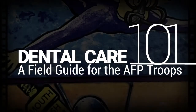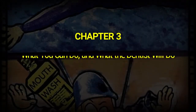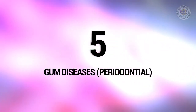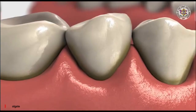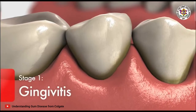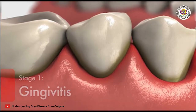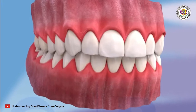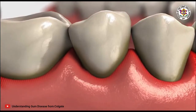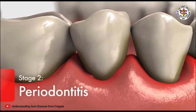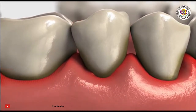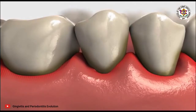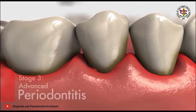Chapter 3, Part 2: Common oral health problems — what you can do and what the dentist will do. Gum or periodontal diseases have different stages. Gingivitis exhibits as mild inflammation of the gums due to plaque buildup. Periodontitis occurs if gingivitis is left untreated, and gum infection damages bone and supporting tissues.